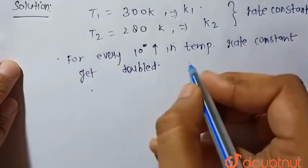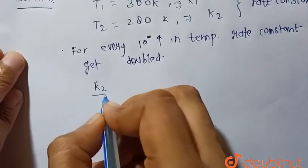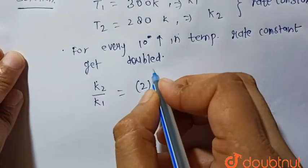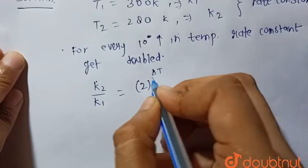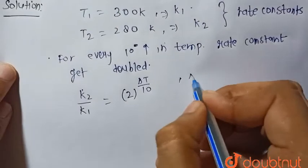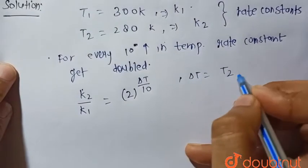So that is, k2 upon k1 is equal to 2 to the power delta T by 10, where delta T is T2 minus T1.